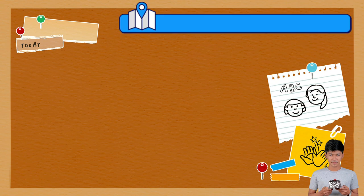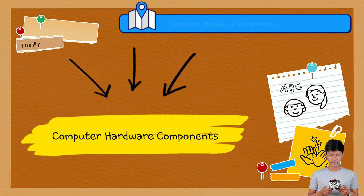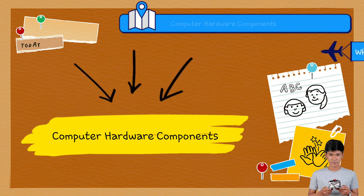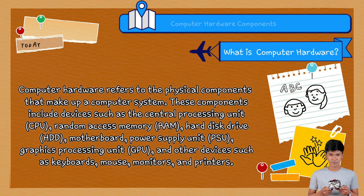Today, we embark on a journey to unravel the mysteries and demystify the realm of computer hardware components. Computer hardware refers to the physical components that make up a computer system. These components include devices such as the central processing unit (CPU), random access memory (RAM), hard disk drive (HDD), motherboard, power supply unit, graphics processing unit (GPU), and other devices such as keyboards, mouse, monitor, and printer.